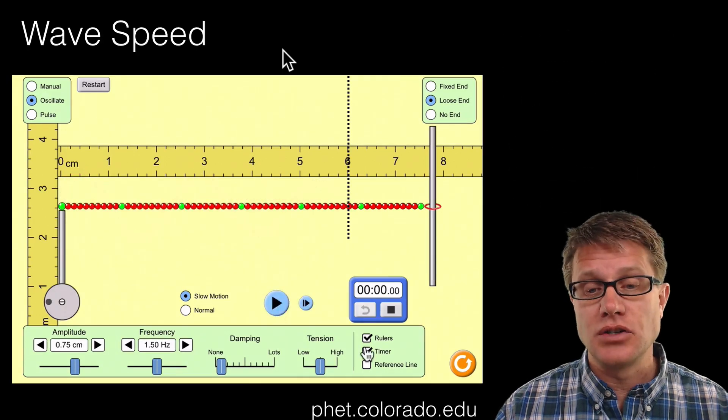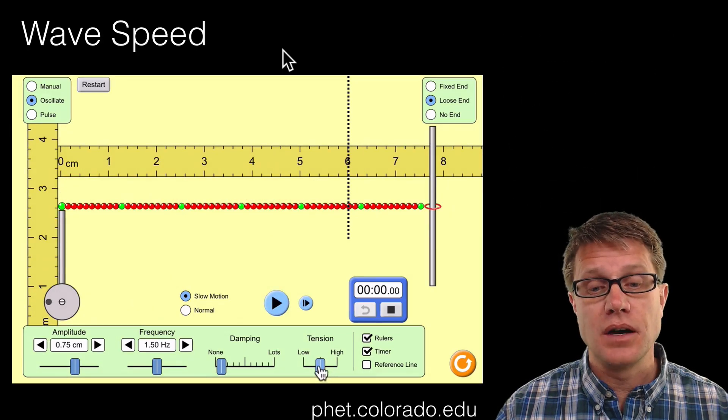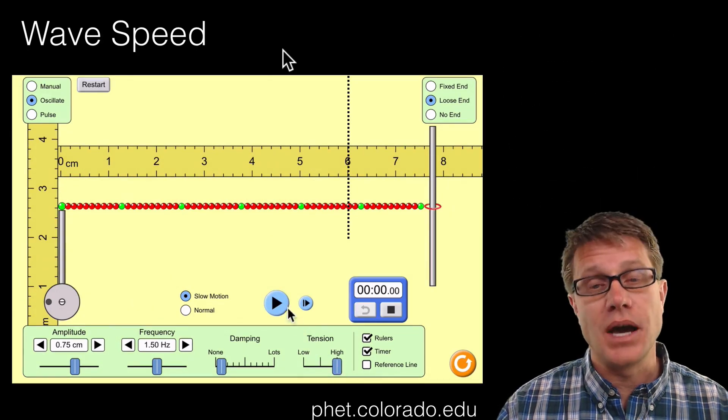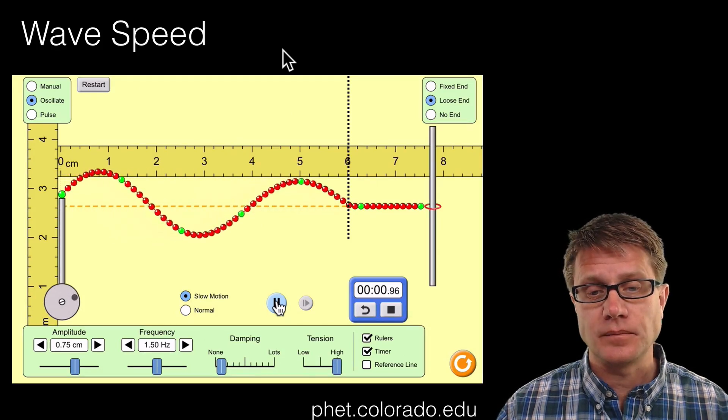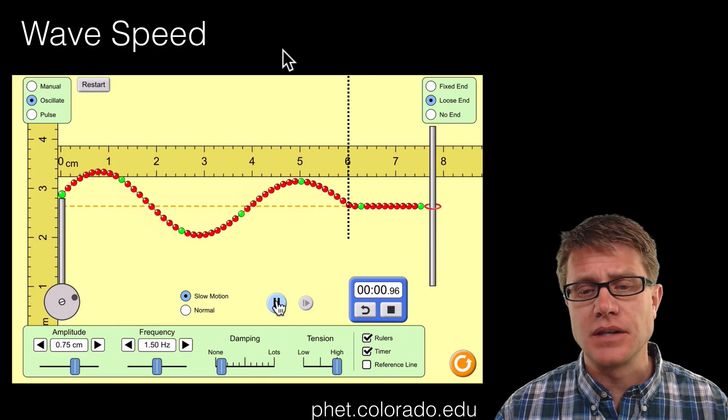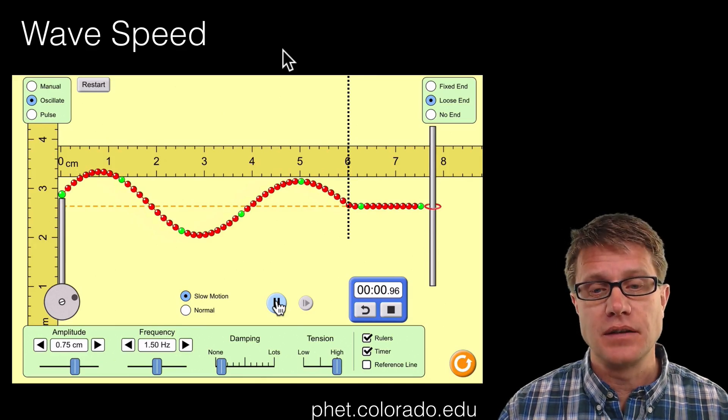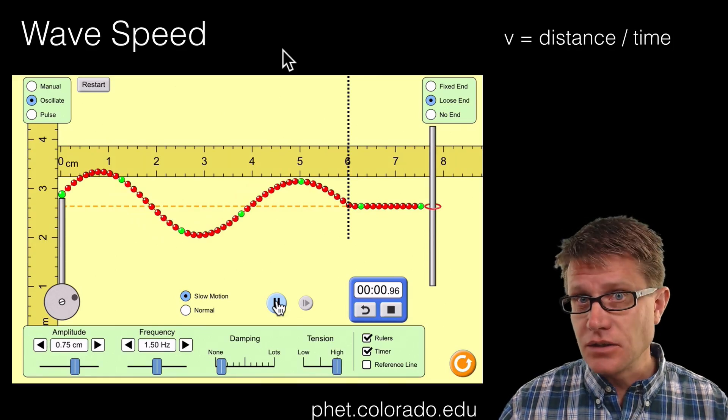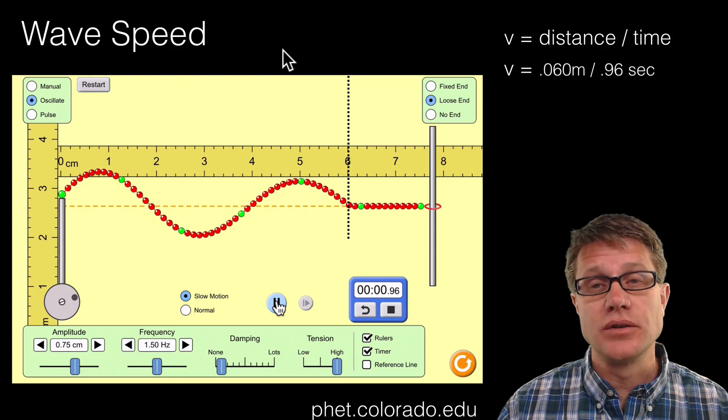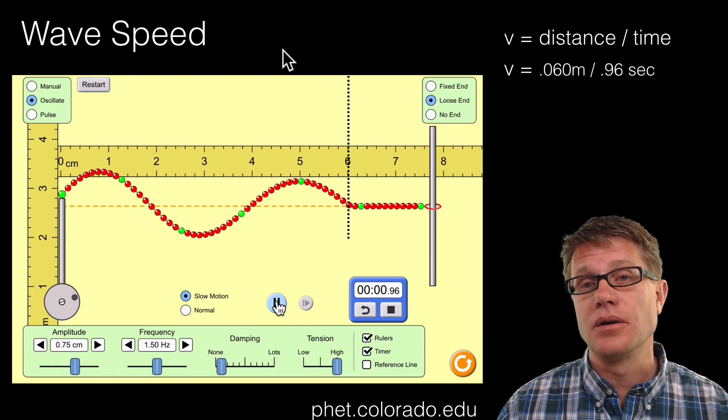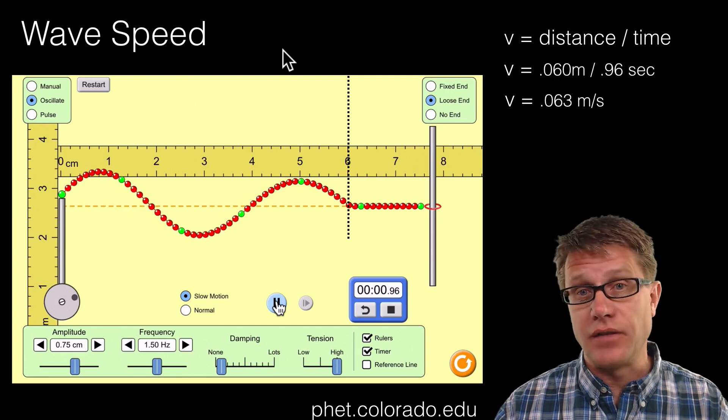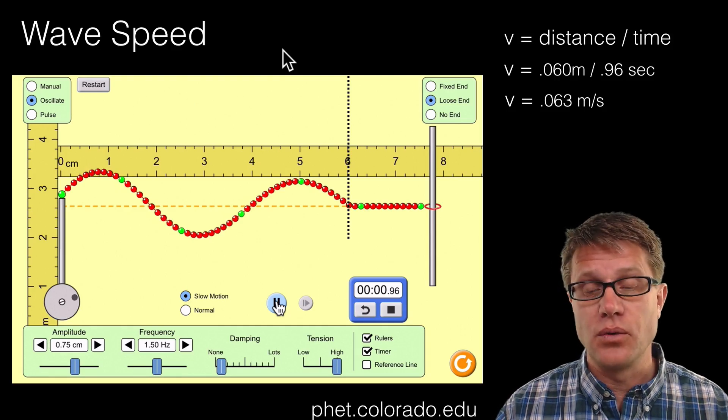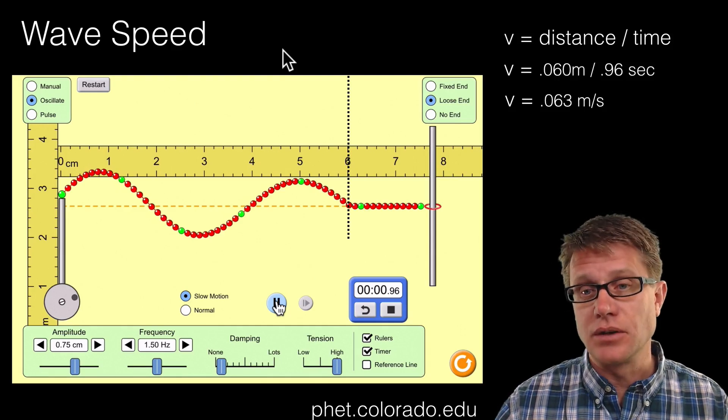We could then try to change the makeup of the material, or the matter through which the wave is moving. So let's start it now. So we have increased tension. It went faster. You can see the time is less, so it is 0.96 seconds. We could calculate the distance we moved. Again that is 0.060 meters per 0.96 seconds. So that is one way. We could get a velocity that is faster. It is much faster than it was before. So as we increase tension we have increased the speed.